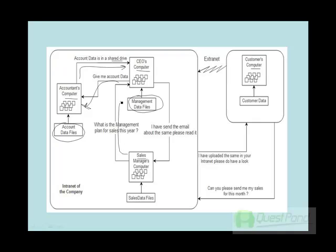Let's say that the sales manager says, okay, what's the strategy for sales this year? And the CEO can send an email. In the same way, when the company is interacting with the external world — its customers who are lying outside its organization boundary — probably they are using an intranet for sharing information. So, one is the data, and one is the data transmission or the protocol by which they exchange data.